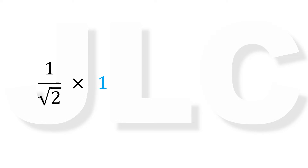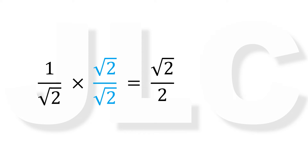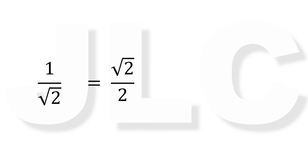Let's multiply 1 over square root of 2 by 1. Note that multiplying a number by 1 yields the same number, so we do not change its value. But instead of writing 1, let's rewrite it as square root of 2 over square root of 2. Take note that this is still 1. Now 1 over square root of 2 times square root of 2 over square root of 2 equals square root of 2 over 2.